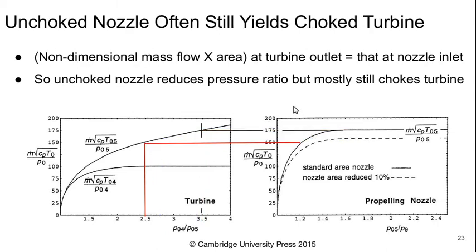We can also use this plot to figure out what's going on even if the propulsive nozzle is unchoked. If the propelling nozzle is unchoked, we can still go across and get to the exit non-dimensional mass flow from the turbine, and we see that we're still in the choked region for the turbine based on its inlet conditions. We'd have to go down to a very low nozzle exit pressure, probably close to 1.1, before we would unchoke the turbine.